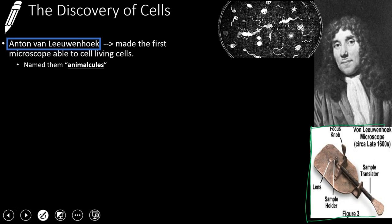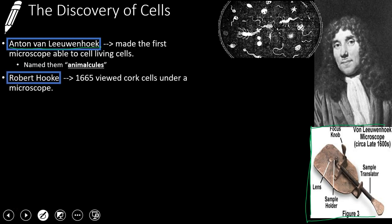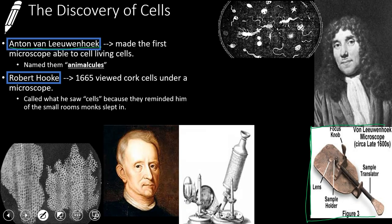Around the same time, we have another gentleman. Remember, Leeuwenhoek was one — we have another gentleman in England, and his name is Robert Hooke. In 1665, he viewed cork — dead cork cells — under a microscope. And this is a sketch of what he saw. When he looked under his microscope, he saw these cork cells, and since they were dead, they weren't moving around. He said these cork cells reminded him of the rooms that some monks lived in — very, very small rooms. So he called them cells. This is where we get the name 'cells' from, because they reminded him of the rooms that monks slept in.